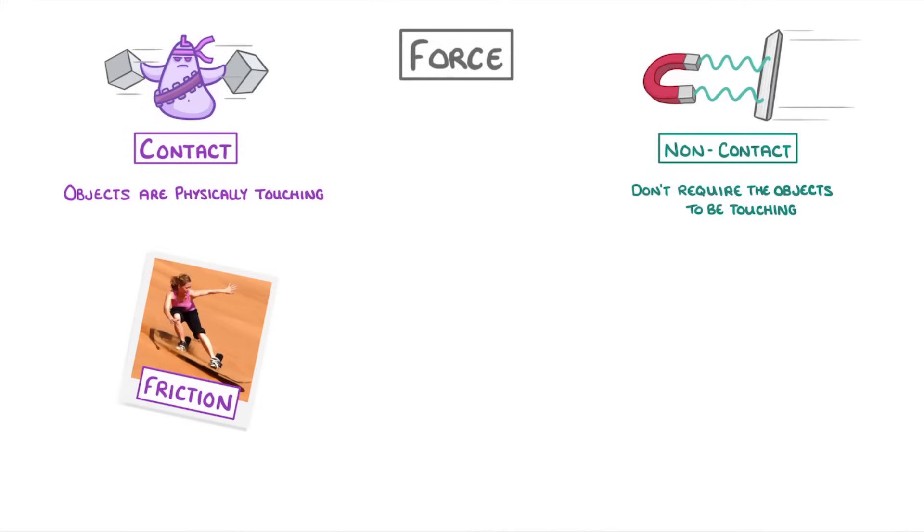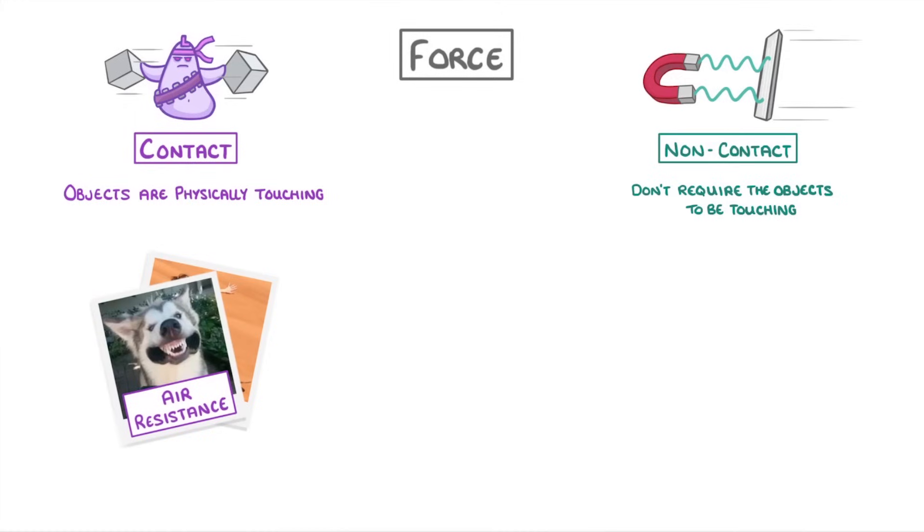For example, the friction between this board and the sand is a contact force, because the board and the sand have to be touching for the friction to act. Similarly, air resistance is a contact force, because the object, in this case the dog's face, has to come into contact with the air particles in order to feel the resistance.